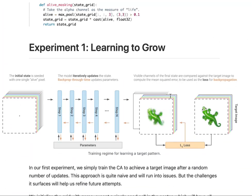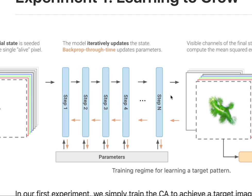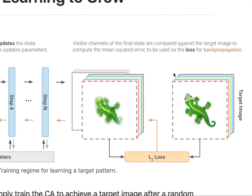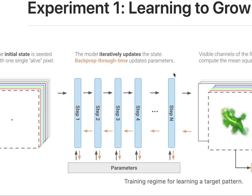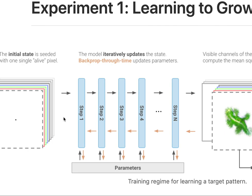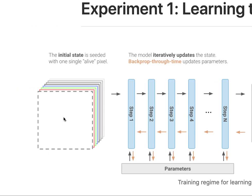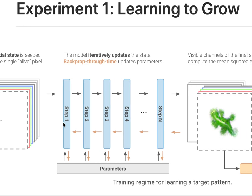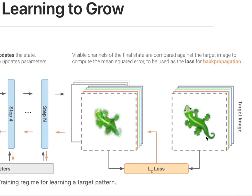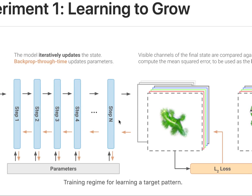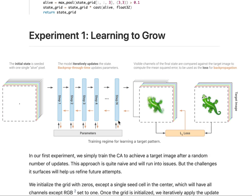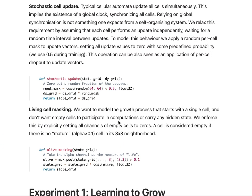They backprop through time. Each of these update steps — and this isn't one neural network with many layers, this is the same neural network applied over and over again — accumulates gradients that basically tell the network what it needs to adjust to go from this one single black pixel to the final desired state. If you do this over and over again, you learn an update rule that will give rise to that pattern.